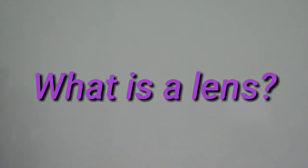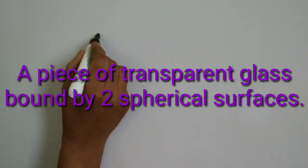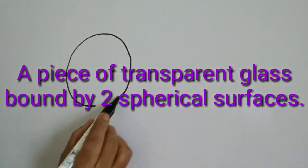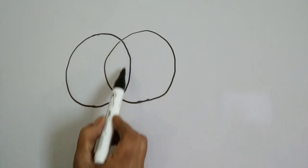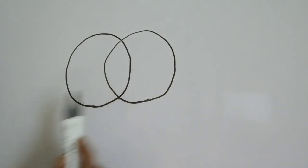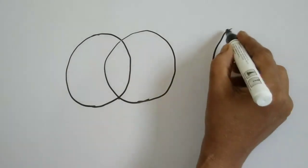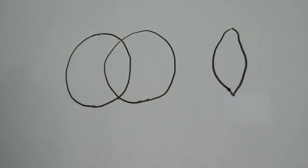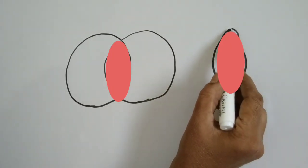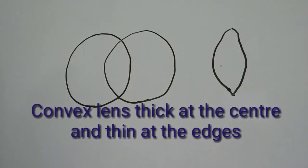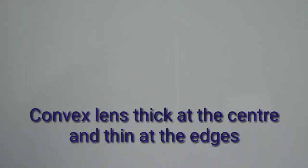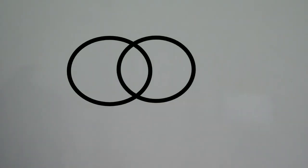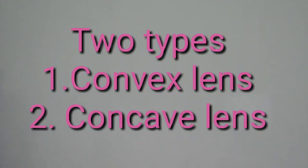What is a lens? Suppose here two spherical surfaces are given. This is one sphere and this is another sphere. When you cut a part of this sphere and cut a part of the other sphere and bind them together, you will get a shape like this — this is what is called a convex lens. The convex lens is thick at the center and thin at the top. This is how lenses are made — we bind the two surfaces of a spherical surface together to get a convex lens.